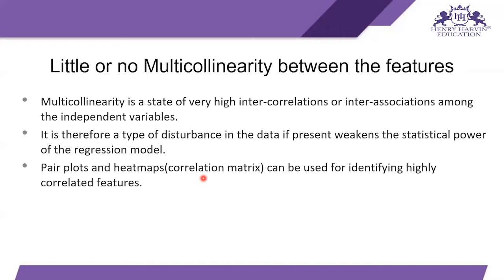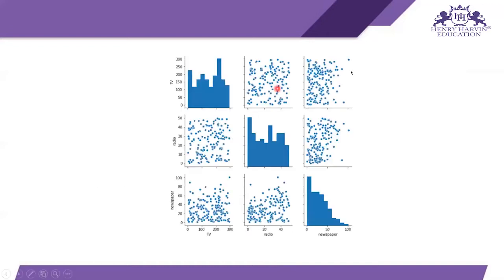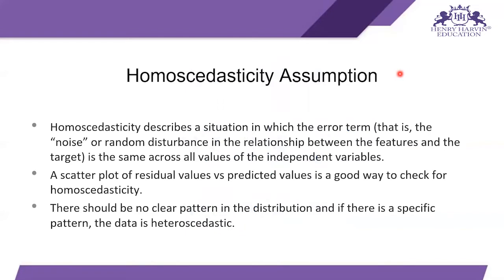If you are going to apply linear regression, the second assumption requires that features be independent. As you can see in this graph, TV is related to TV, radio to radio, and newspaper to newspaper — but TV is not related to radio or newspaper. Since there is no correlation or dependency between those input features, we can use linear regression on this data.